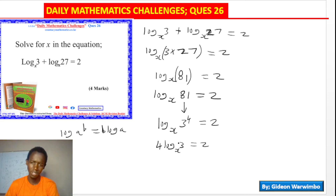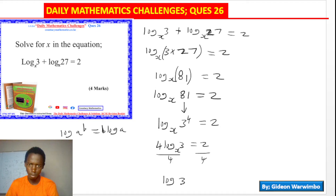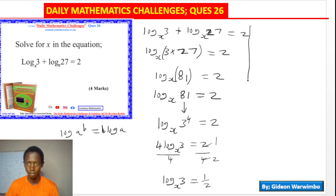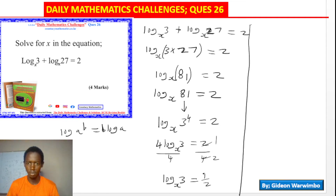The question is becoming much better. We can divide both sides by 4. Dividing 2 by 4 gives us one half. So we get log base x of 3 equals one half.